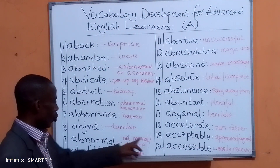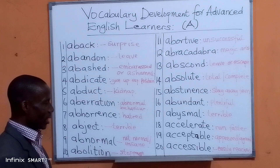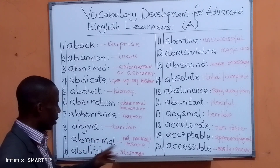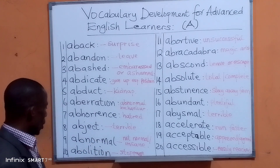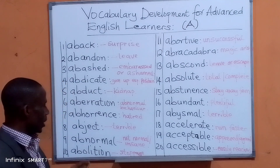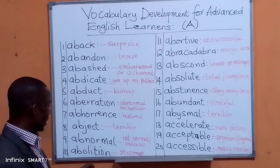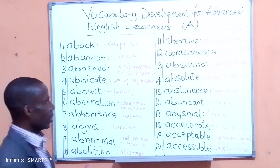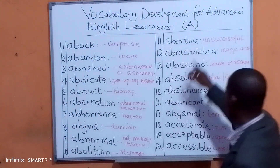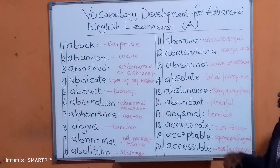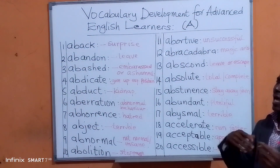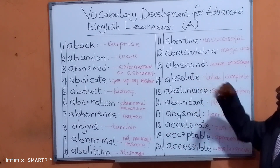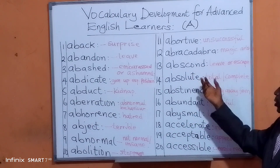Abnormal means not normal, insane. For example: 'This man is abnormal. The situation is abnormal.' Abolition means stopped. For example: 'The government will want an abolition of cigarette smoking.' Abort or aborting means unsuccessful. For example: 'The trip was aborted. The business was aborted. The coup was aborted.'